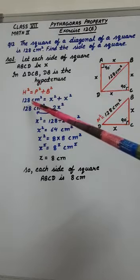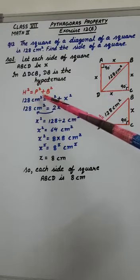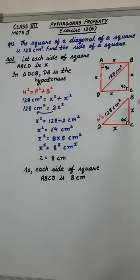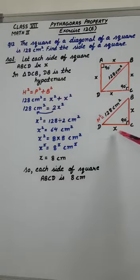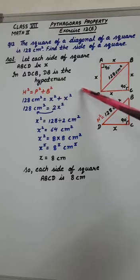Directly it is 128 cm square. Now in place of perpendicular, value is X, so X square plus in place of base it is X, X square.